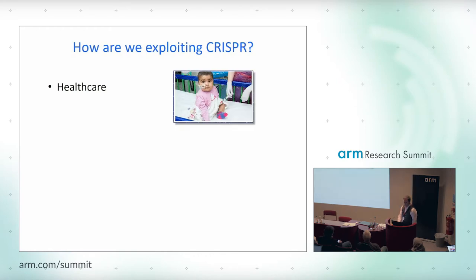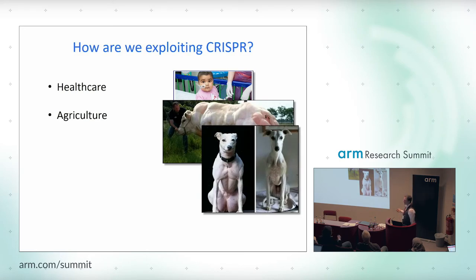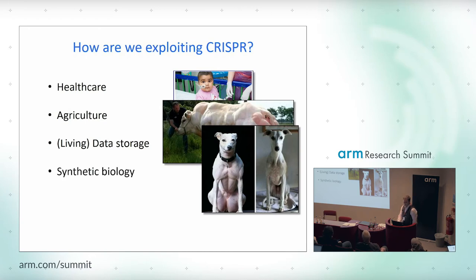So how are we exploiting CRISPR? In healthcare, just like I mentioned with Layla Richards. And in agriculture — this is a picture of a double-muscled cow. If you're the farmer, you get twice as much money for your meat. This is a naturally occurring mutation that just happened through chance in one particular gene. With CRISPR, you can recapitulate this at will in any organism. What you're recreating is a naturally occurring mutation with more precision — it's not like a GM crop or GM animal. There's also living data storage, synthetic biology, and augmented humanity. What I focus on is taking disease DNA and making it normal. Augmented humanity is taking normal DNA and making it superhuman.